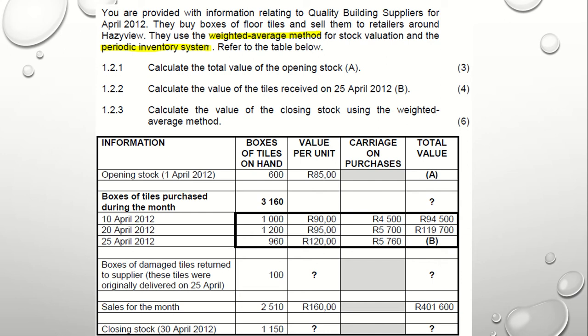Boxes of damaged tiles returned to suppliers — these tiles were originally received on the 25th of April, so the cost price is $120. We also have carriage on purchases, but when you calculate the cost price of goods returned to the supplier, only take the cost price per unit. Do not add carriage on purchases, because when you return goods to the supplier there is no way to recover transportation costs. That $5,760 was to transport 960 boxes — if you only return 100 boxes, you cannot recover that amount.